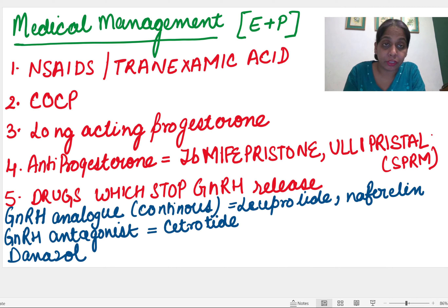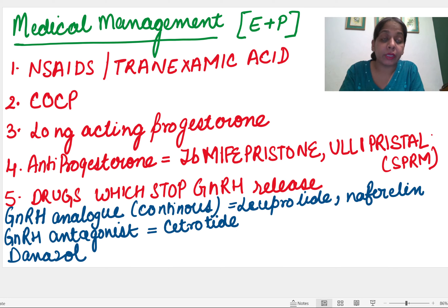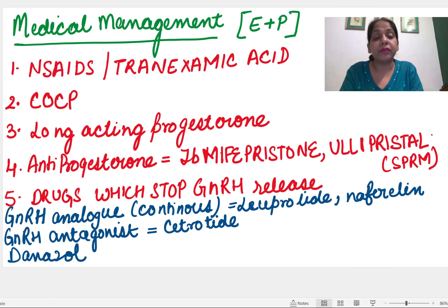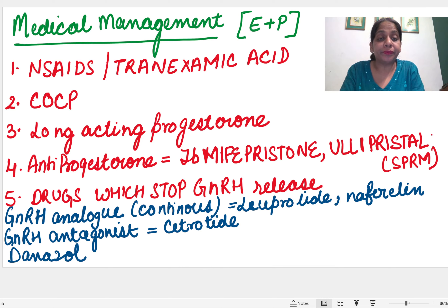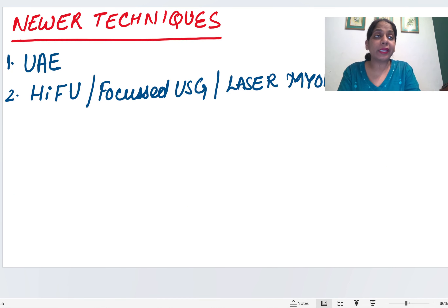Anti-progestogens such as mifepristone and ulipristal can be given. GnRH analogues in continuous form stop GnRH release — unlike the natural pulsatile release — thereby suppressing menstruation and bleeding. Trade names for continuous GnRH analogues include leuprolide and nafarelin. GnRH antagonists include cetrorelix. These drugs stop the release of gonadotropin-releasing hormone.